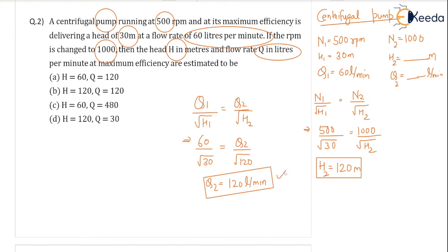So these are the two values we got as answer: h2 equals 120 meter and q2 equals 120 liters per minute. So your option is h2 120 and q 120. So b is the right answer. You can see both are 120 and 120, right? Only b is the option. Rest all are not having same data 120, 120. Thank you.